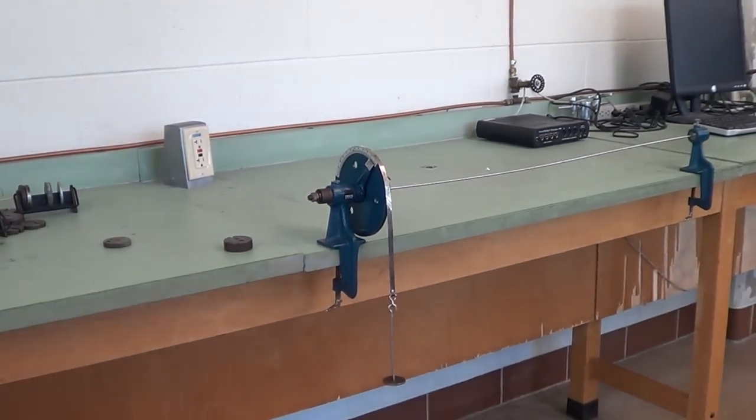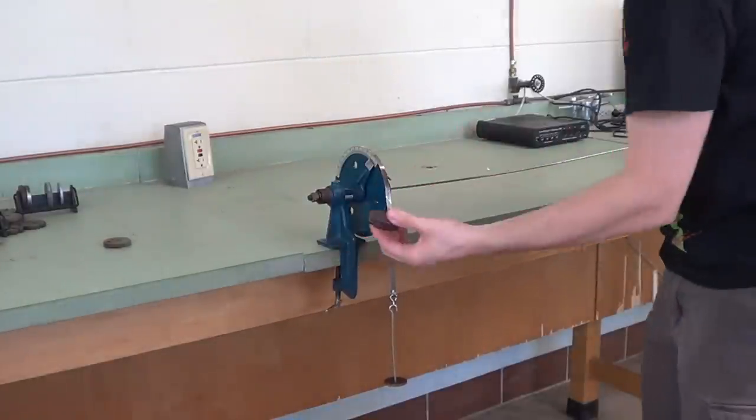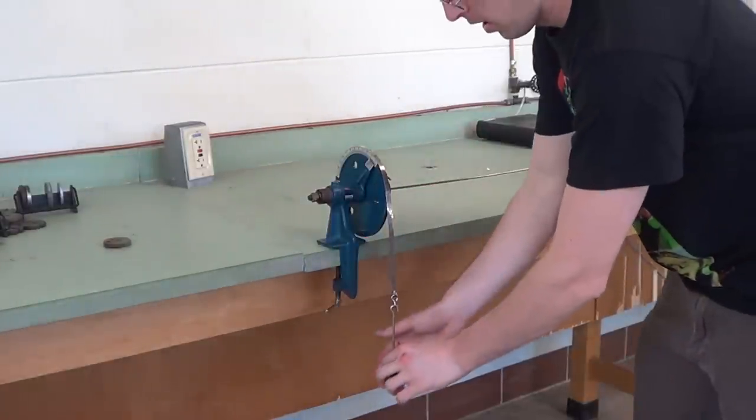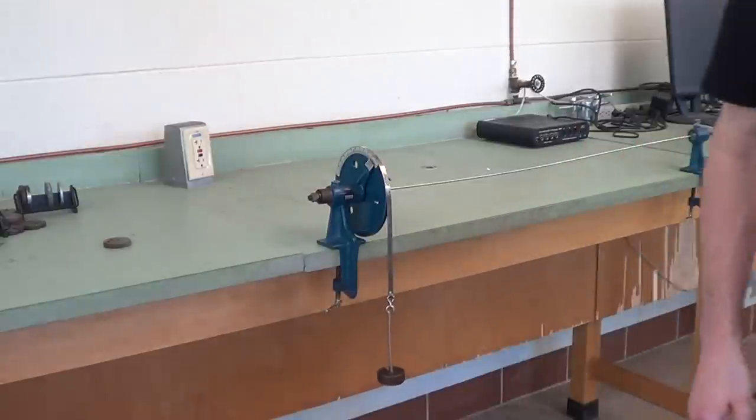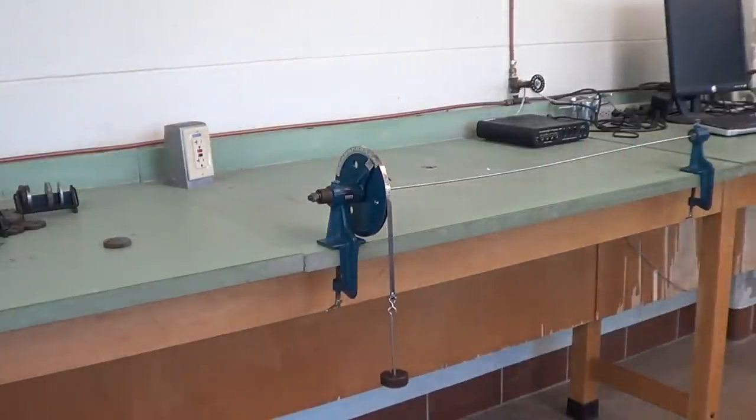we'll add in a set amount of mass, in this case 200 grams, onto the mass hanger. And that will bend the rod. It will twist it a little bit.